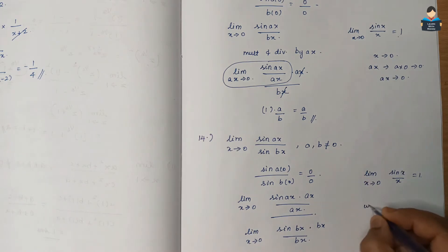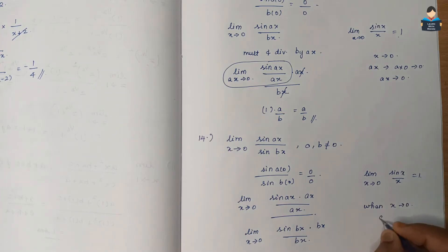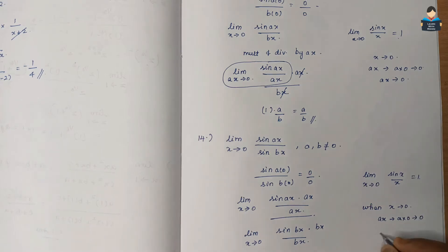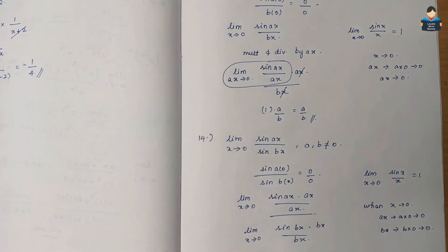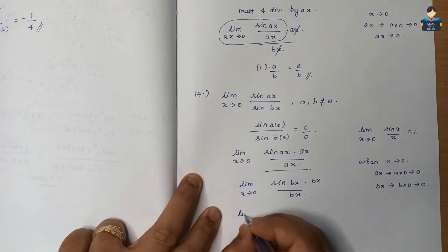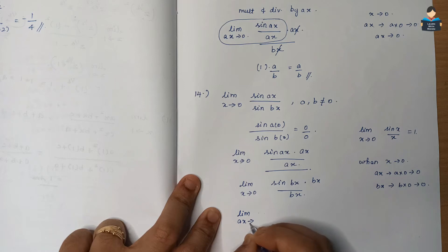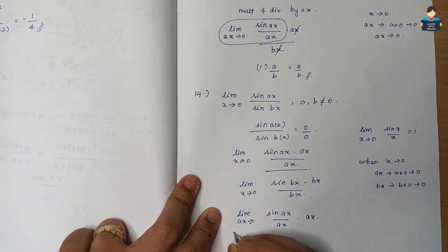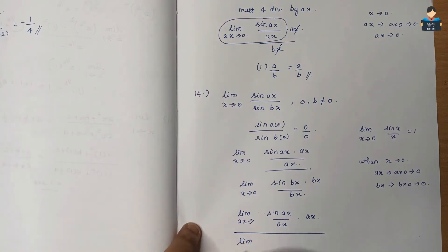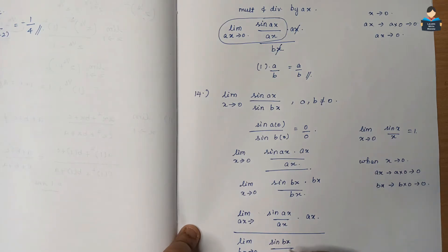When x tends to 0, ax also tends to 0 and bx also tends to 0. So we can write: limit ax tends to 0 of sin(ax)/ax × ax, divided by limit bx tends to 0 of sin(bx)/bx × bx. The x terms cancel.